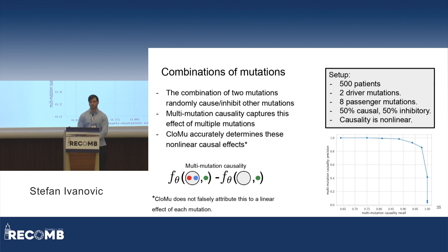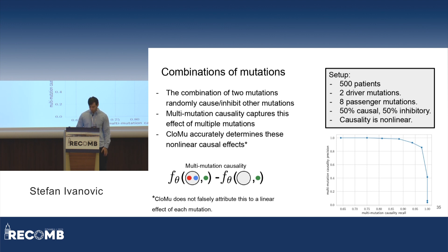Another set of simulations observes the effect of combinations of mutations working together nonlinearly: 500 patients, two driver mutations, eight passenger mutations, with 50% of causal relationships being causal and 50% inhibitory. Specifically, the two driver mutations work together to either cause or inhibit other mutations, but individually no mutation causes or inhibits any other mutation — this is purely a nonlinear effect of the two mutations working together. We can use our definition of multi-mutation causality to detect this, and CLOMU accurately determines these nonlinear causal relationships as shown in the precision-recall curve. CLOMU does not falsely attribute this to linear effects; it truly learns only that the combination of A and B causes C.